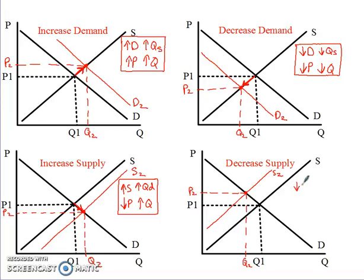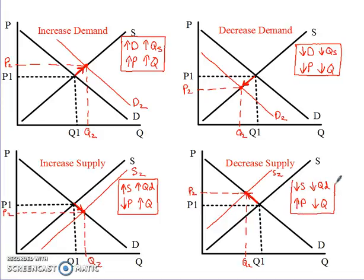Then write out the four things that happened. That would be a decrease in supply — supply curve shifted left. There's a lot to mess up here, so be really careful. That arrow is not pointing up, it's going left. Quantity went left, quantity went down — that's a decrease. And you say 'quantity demanded' because you moved along the demand curve. So it's a decrease in quantity demanded, an increase in the price, and a decrease in the quantity.